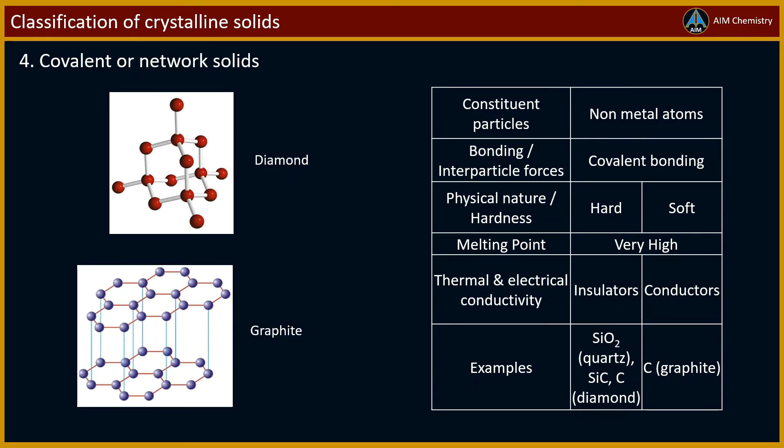Fourth and last type of crystalline solids is covalent or network solids. Constituent particles in covalent or network solids are non-metal atoms. In these solids, atoms are held by covalent bonding.